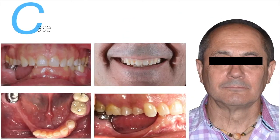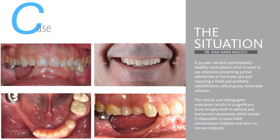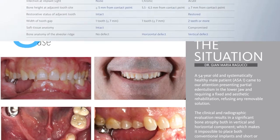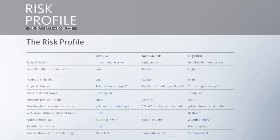The case I want to introduce is Jose, a 51-year-old patient who came to our clinic to replace missing teeth in the lower jaw. Jose is classified as a healthy ASA-1 patient without any type of disease, presenting a fully dentate maxilla and a partially dentate mandible.